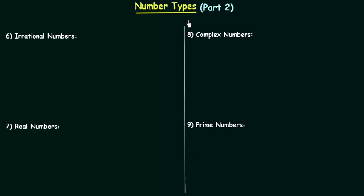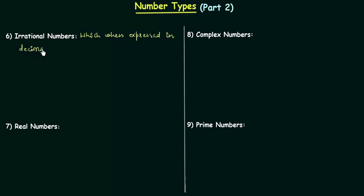We will continue with number types in this presentation. The sixth type is irrational numbers. Irrational numbers are the numbers which, when expressed in decimal form, are neither terminating nor repeating decimals.